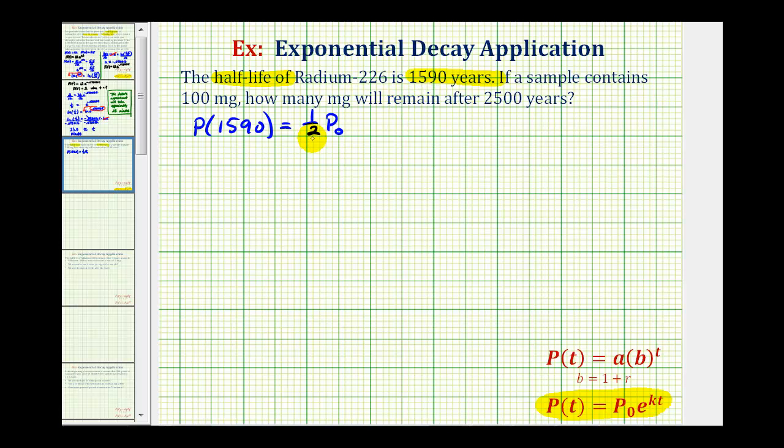So if we let P₀ equal one, that means P(1590) would be equal to one-half, which would have to equal one times e raised to the power of k times 1,590. So for example, if we start with one milligram, then after 1,590 years, we must be left with half of a milligram.